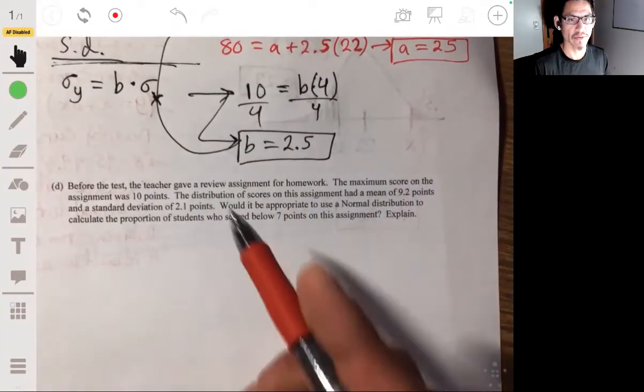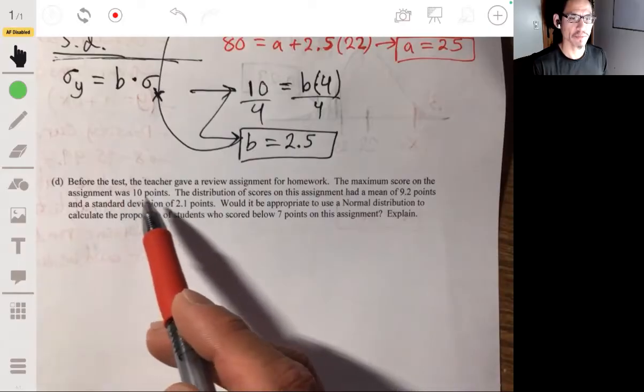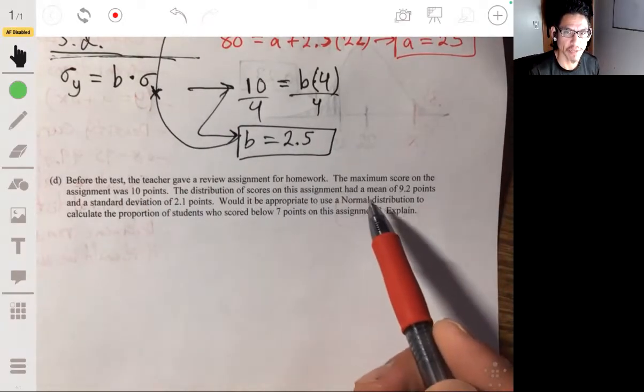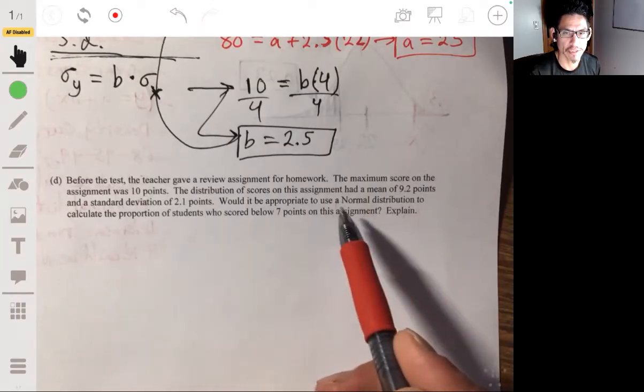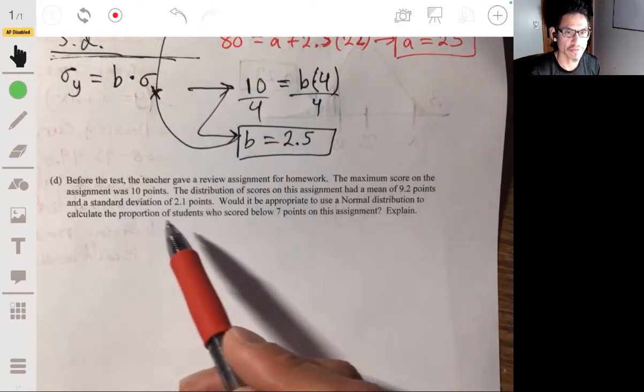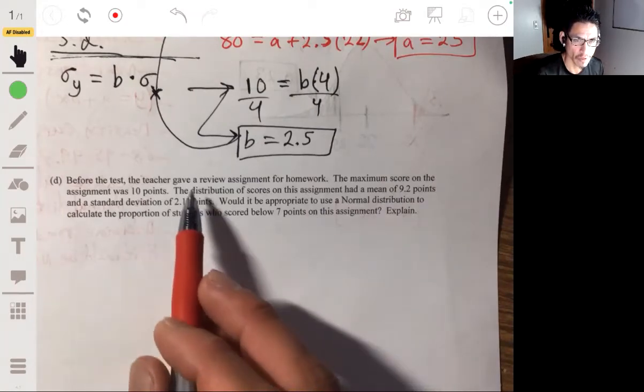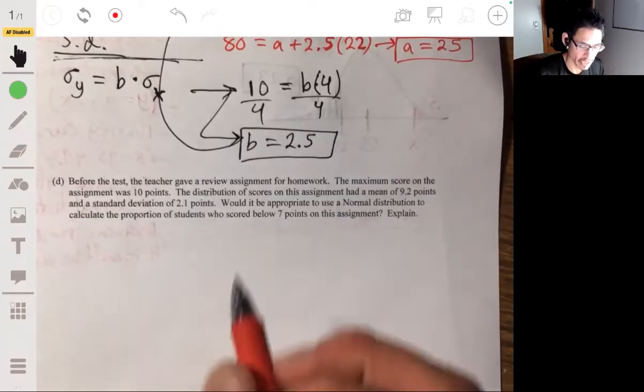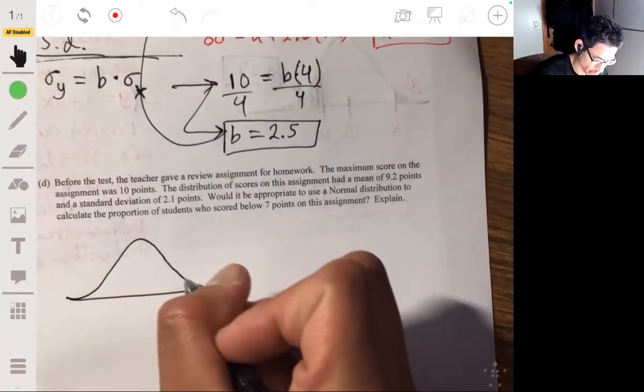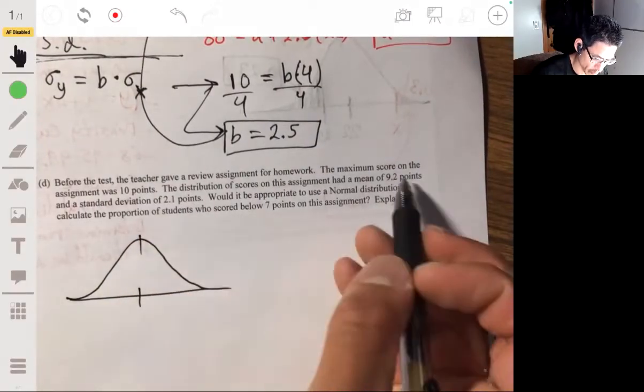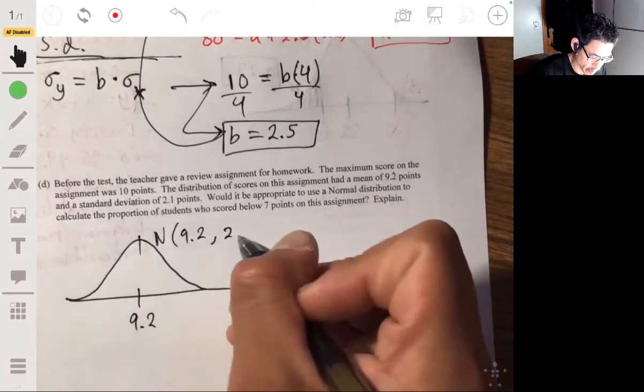Part D: Before the test, the teacher gave a review assignment for homework. The maximum score on the assignment was 10 points. The distribution of scores on the assignment had a mean of 9.2 points and a standard deviation of 2.1 points. Would it be appropriate to use a normal distribution to calculate the proportion of students who scored below 7 points on the assignment? Okay, so let's assume that it would be normal, so let's draw a normal curve. The mean of 9.2, so normal N(9.2, 2.1).